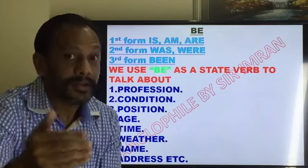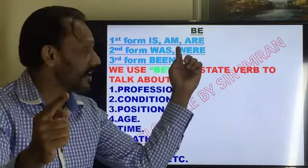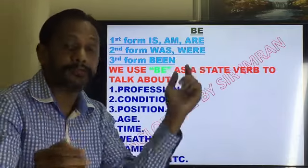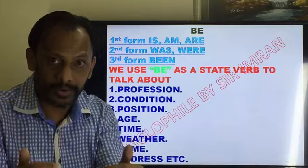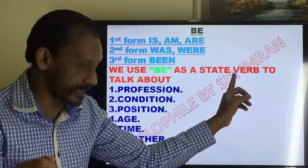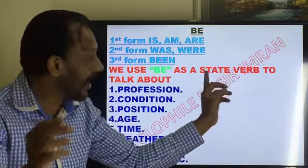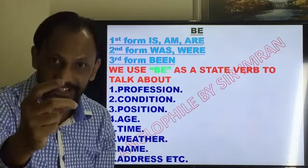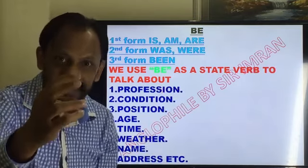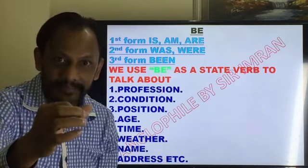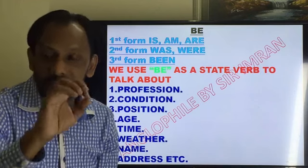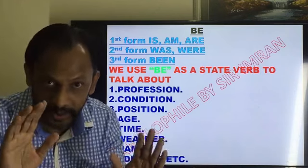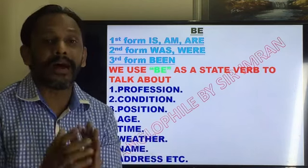We use be — which means is/am/are, was/were, and been — as a state verb to talk about profession, condition, position, age, time, weather, and address. I hope you understand this. Now let me make some sentences so that you will be able to understand easily.